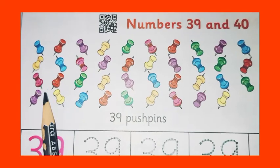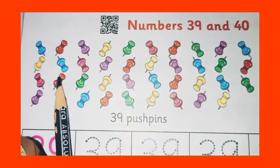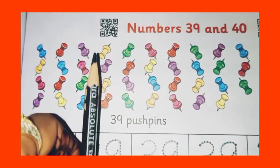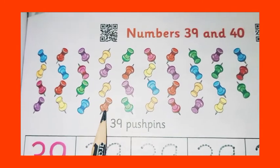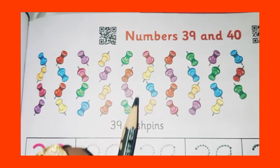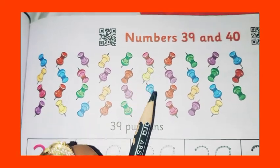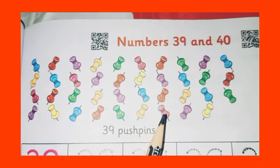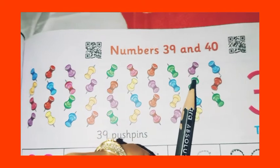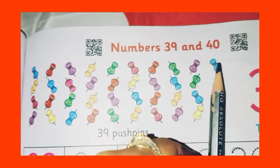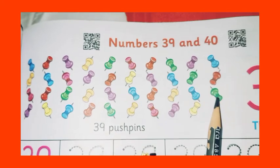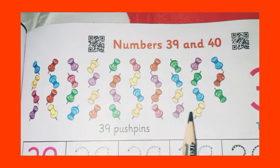One, two, three, four, five, six, seven, eight, nine, ten, eleven, twelve, thirteen, fourteen, fifteen, sixteen, seventeen, eighteen, nineteen, twenty, twenty-one, twenty-two, twenty-three, twenty-four, twenty-five, twenty-six, twenty-seven, twenty-eight, twenty-nine, thirty, thirty-one, thirty-two, thirty-three, thirty-four, thirty-five, thirty-six, thirty-seven, thirty-eight, and last one is 39. So here, total how many pushpins? Thirty-nine.